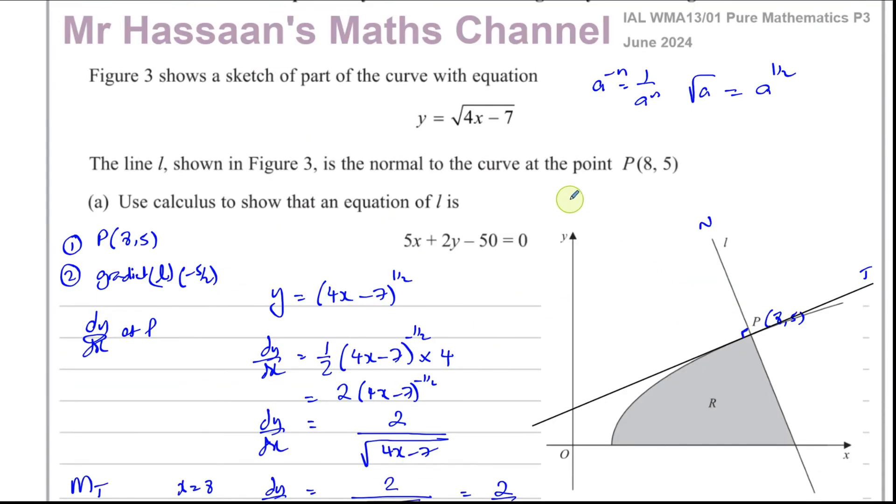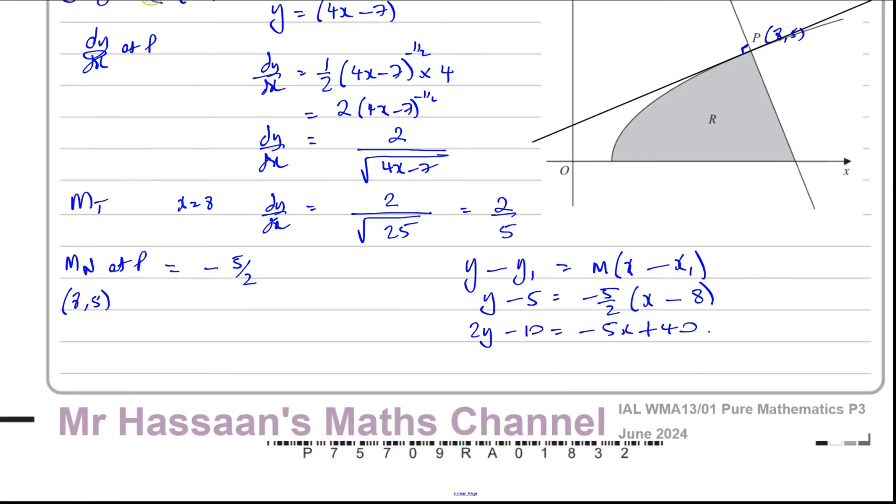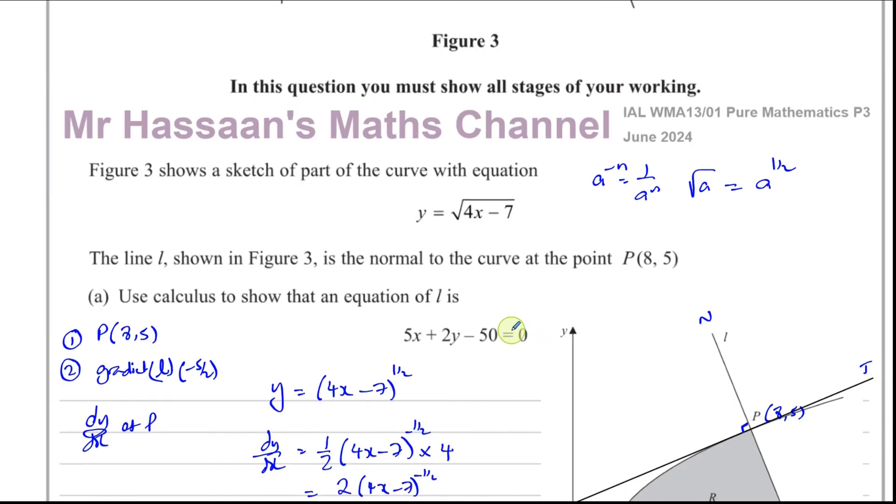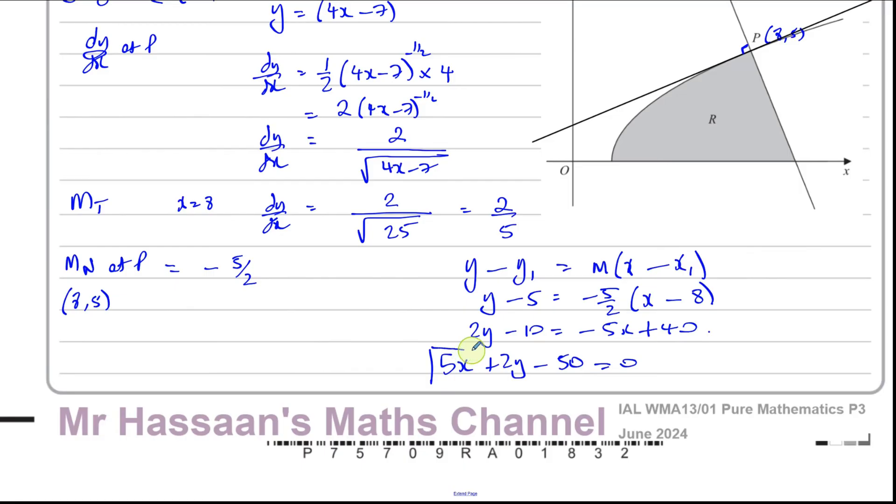And we want to express it in the form here where everything equals 0. So what I'm going to do here is I'm going to just add 5x to both sides. So 5x plus 2y, and I have minus 10, and I have minus 40, which is minus 50, is equal to 0. And that's the answer. 5x plus 2y minus 50 equals 0. That's exactly what we had to show. And there is the answer to part A.